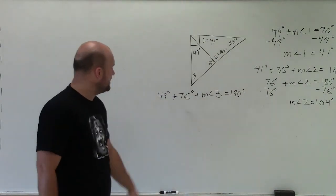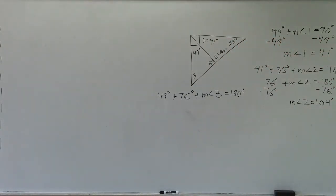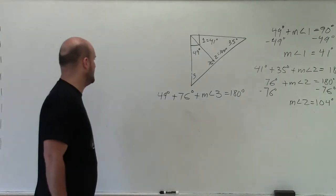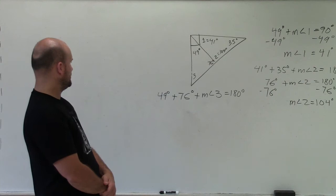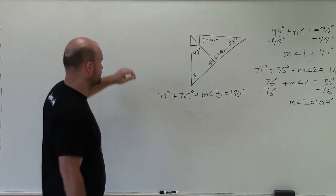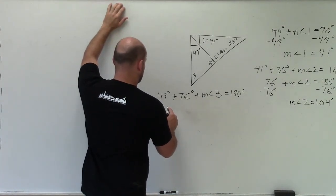So now we just go ahead and add 49 degrees plus 76 degrees, which would be, let's see, 100 and that'd be 11. So 135, 50, 125, yeah, 125.